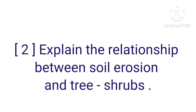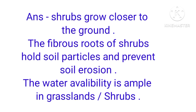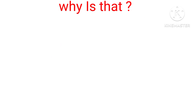Question 2: Explain the relationship between soil erosion and tree shrubs. Answer: Shrubs grow closer to the ground. The fibrous roots of shrubs hold soil particles and prevent soil erosion. The water availability is ample in grasslands and shrubs.